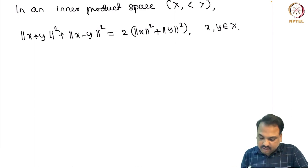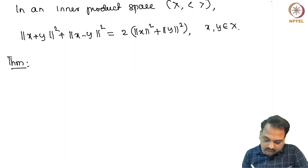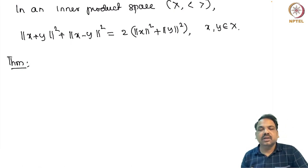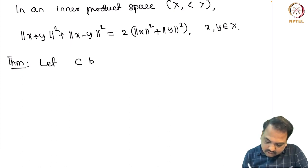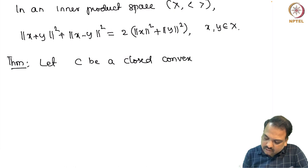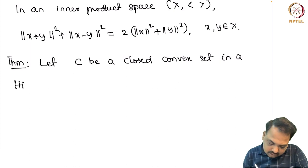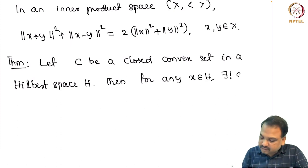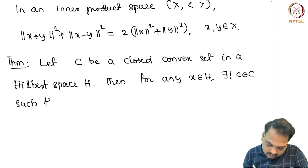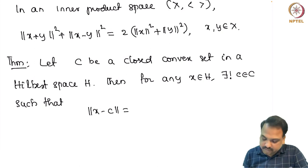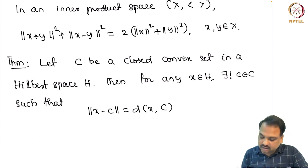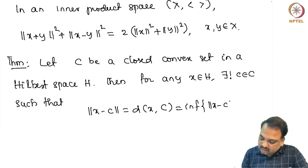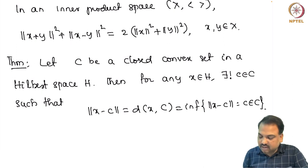Using the parallelogram law, we can show that in a Hilbert space H, if you have a closed convex set C, then given any point x in H there exists a nearest point from C. Formally: let C be a closed convex set in a Hilbert space H. Then for any x in H there exists a unique c in C such that the distance between x and c equals the distance between x and C, i.e., the infimum of norm(x minus c) over all c in C, and such an element is unique.